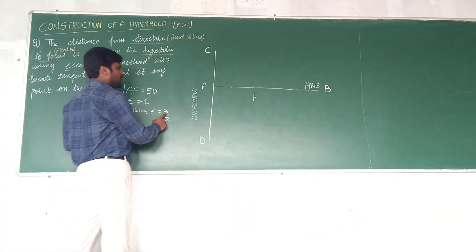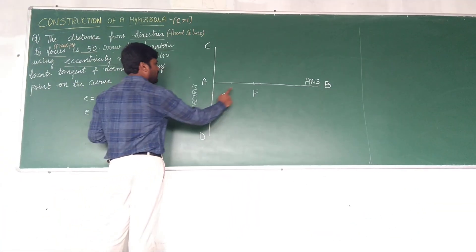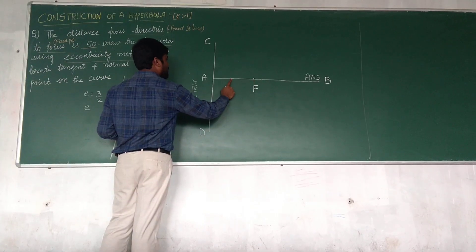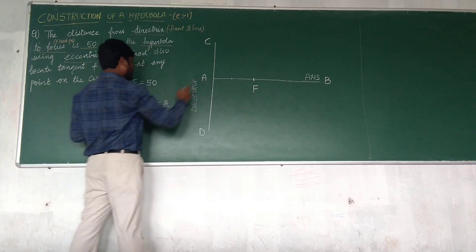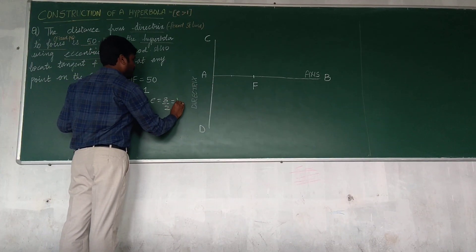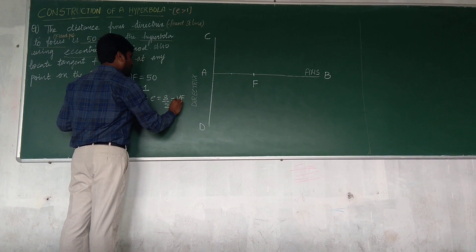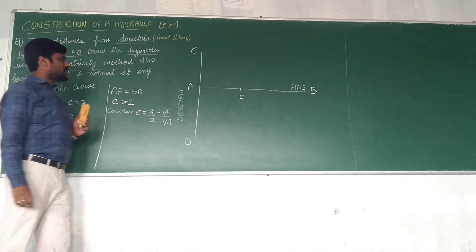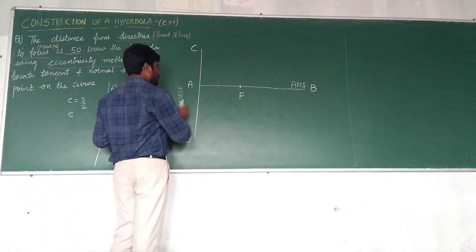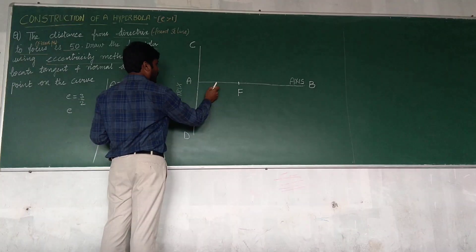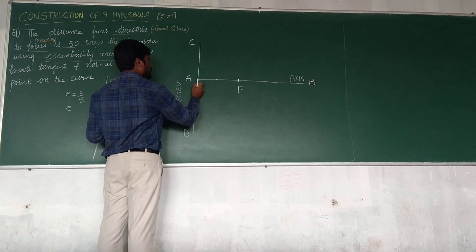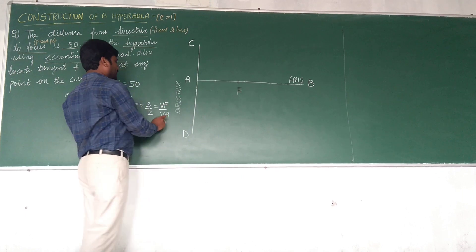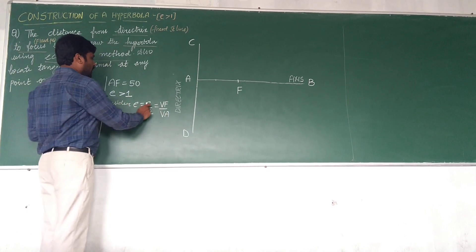Now what exactly is eccentricity? As we discussed in previous talks also, the distance from vertex to focus, focus to vertex and vertex to directrix. This is nothing but VF by VA. VF by VA. So eccentricity is defined as the ratio of point to focus, point to directrix or vertex to focus or vertex to directrix.